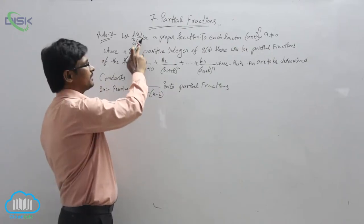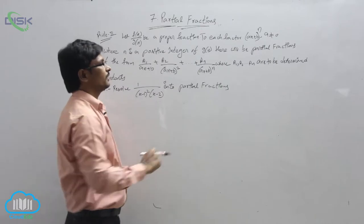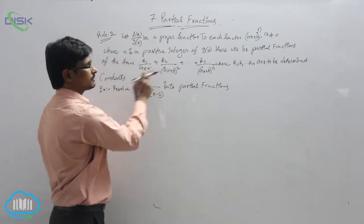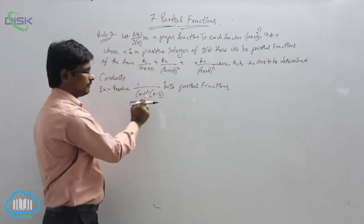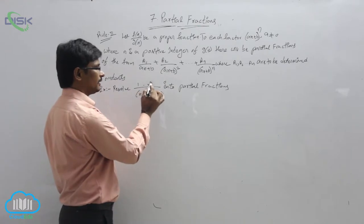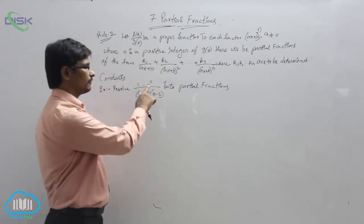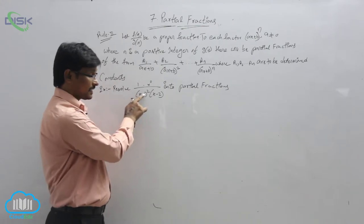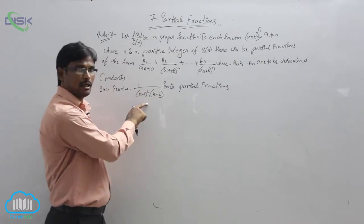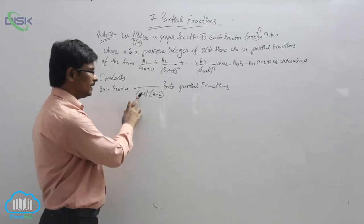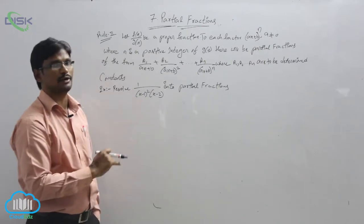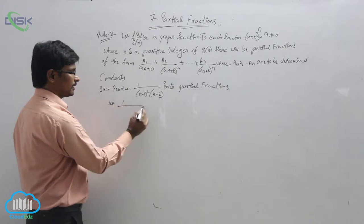The second rule: let f(x)/g(x) be a proper fraction. For each factor (ax+b)^n, we write g(x) as partial fractions. We will see one example. Observe the degree of the numerator — it is 0 (x^0). The degree of the denominator is x²·x = x³. Clearly the degree of the numerator is less than the degree of the denominator, so this is a proper fraction. Here we have (x-1)^2, which is a different case from (x-1)^1.